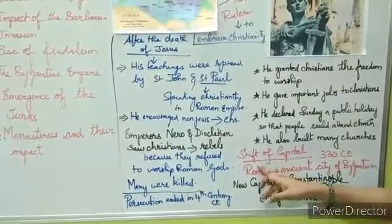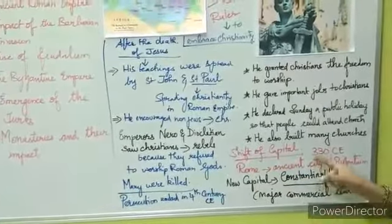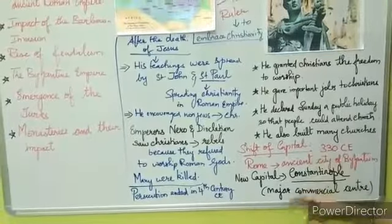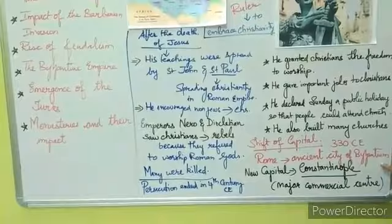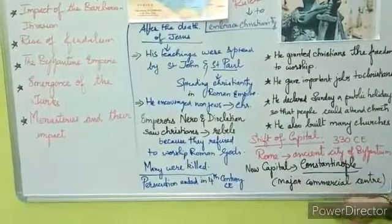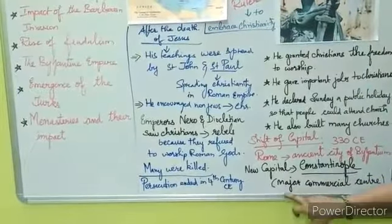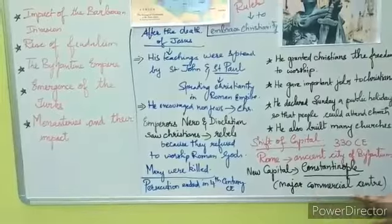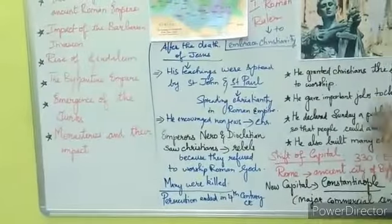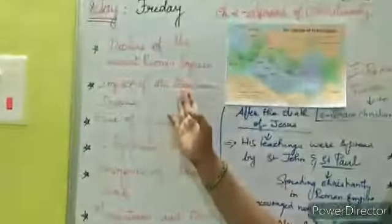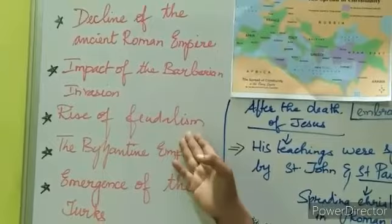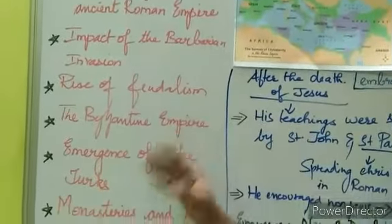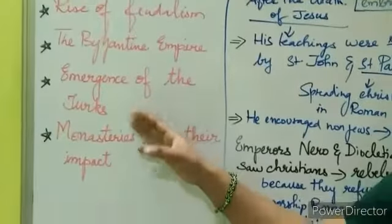The next main topic is about the shift of the capital, which took place in 330 CE. Rome was converted — the capital was moved to the ancient city of Byzantium, and the new capital was called Constantinople, a major commercial center. The other major topics we are going to discuss in the lesson are: the decline of the ancient Roman Empire, the impact of the barbarian invasion, rise of feudalism, the Byzantine Empire, the emergence of the Ottoman Turks, and monasteries and their impact.